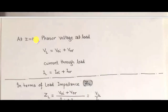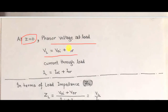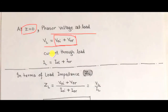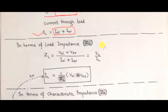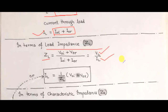At Z equals 0, the phasor voltage of the load is denoted V_L, which equals the summation of the incident and reflected voltage amplitudes: V_L = V_naught_I + V_naught_R. Similarly, the load current I_L equals the summation of the incident and reflected current amplitudes. The load impedance Z_L is then the ratio of load voltage to load current, so Z_L equals (V_naught_I + V_naught_R) divided by (I_naught_I + I_naught_R).